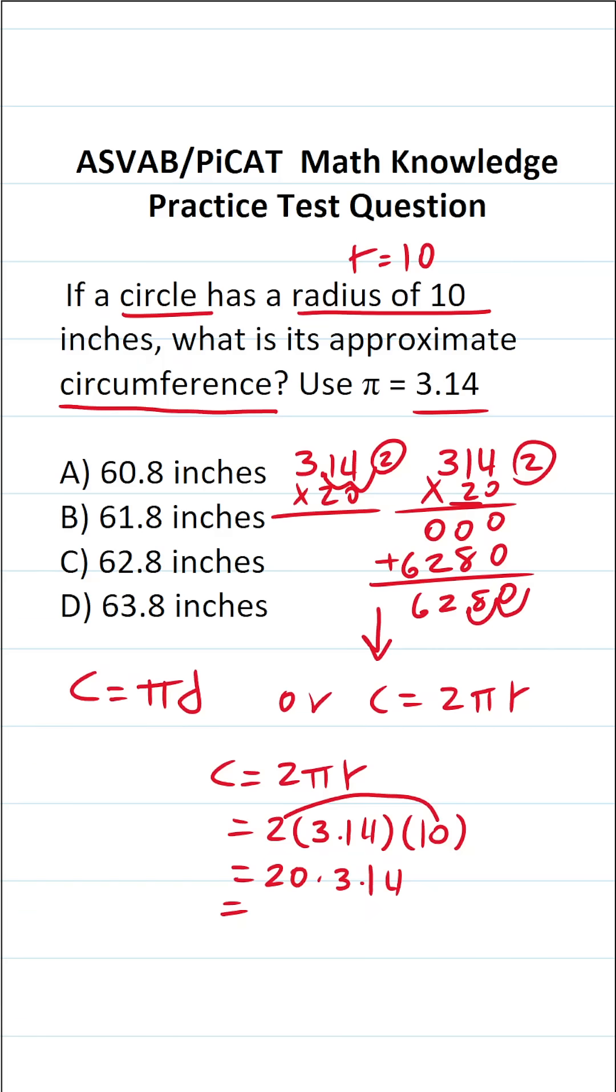1, 2. We can see that the circumference of our circle is going to be 62.8 inches. So the answer to this one is C.